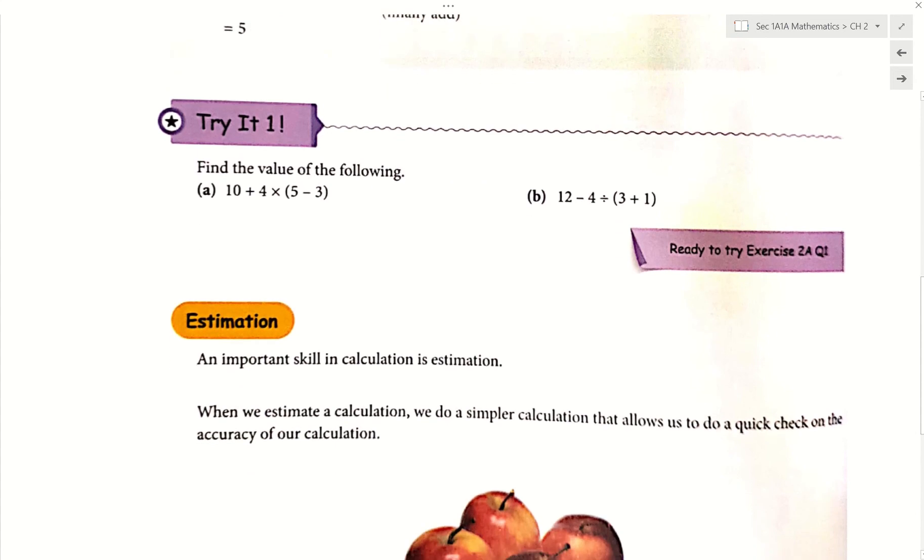Now try one part A. Don't use your calculator yet. I'll show you the working. 10 plus 4 times 5 minus 3. I'm doing the bracket first. That's why I'm just copying everything else down. 5 minus 3 is 2. So all this is equal. Now I will do the multiply next. If I'm doing the multiply, everything else I just copy down. 10 plus 4 times 2, we have 8. And we get 18.